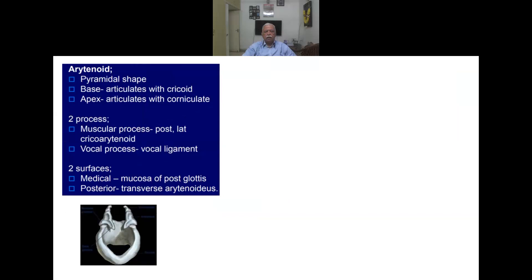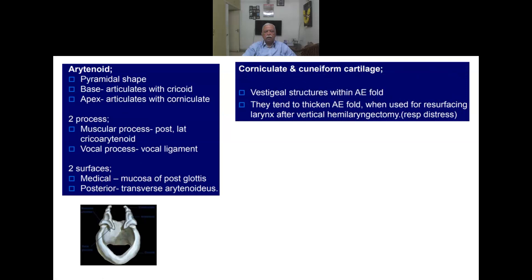The arytenoid is pyramid-shaped. Its base articulates with the cricoid, and its apex articulates with the corniculate cartilage. It has two processes — muscular and vocal — and medial and posterior surfaces. During intubation or trauma, the arytenoid can be fractured or dislocated. Since the majority of vocal cord attachment is to the arytenoid, arytenoid fracture significantly affects vocal cord function.